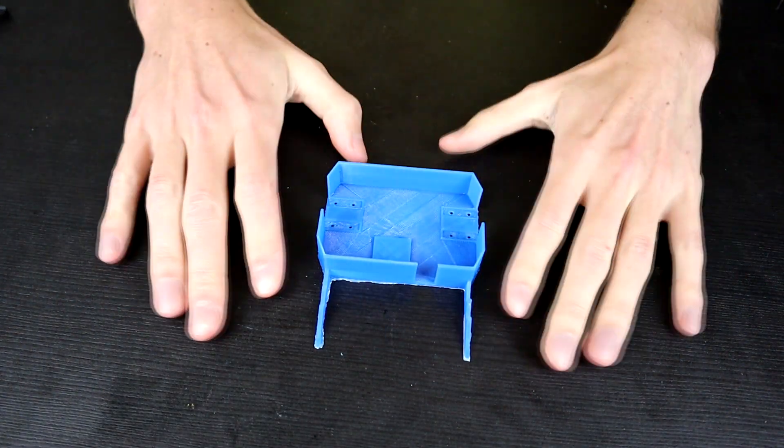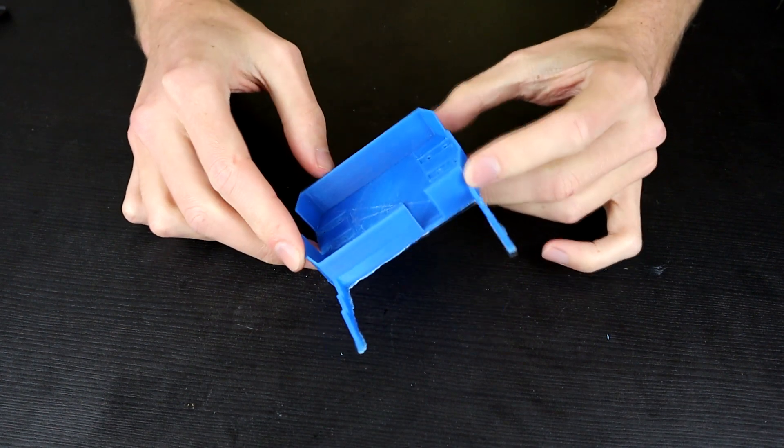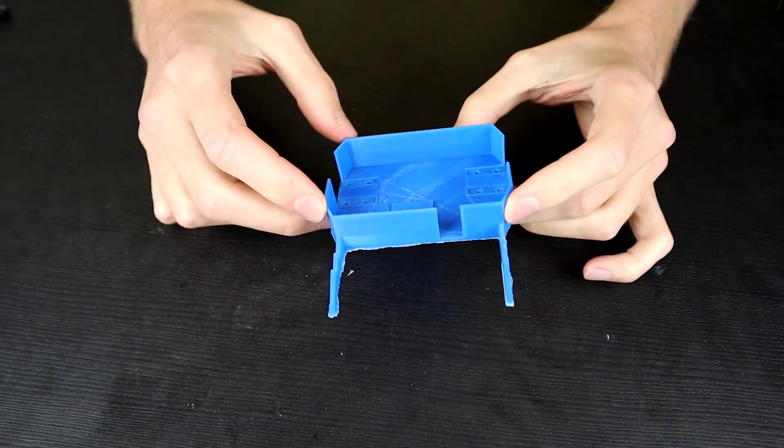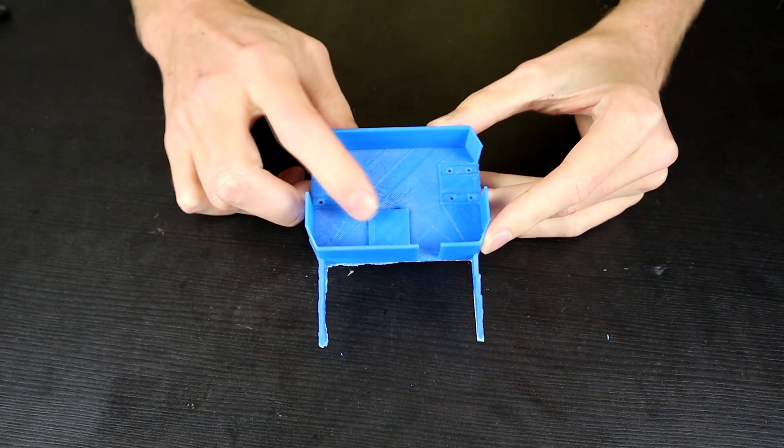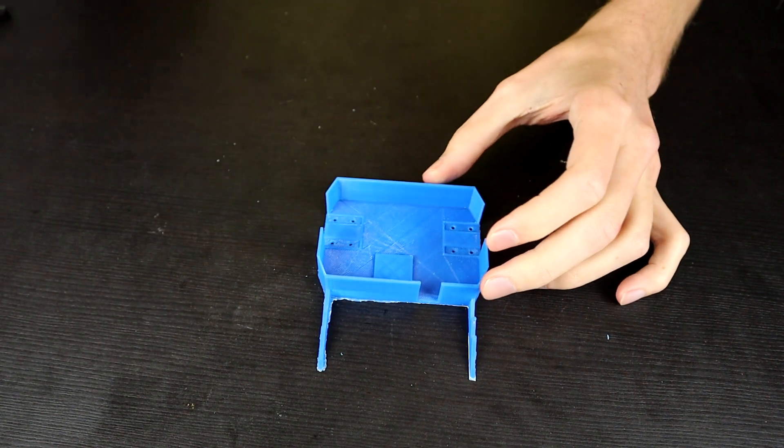So here is the main chassis. I have essentially stolen the chassis out of the super low weight antweight and I have modified it. So rather than having a brushless motor in here we have a mount for a servo and the servo we're going to use is the same one that I'm currently using in the saw robot.